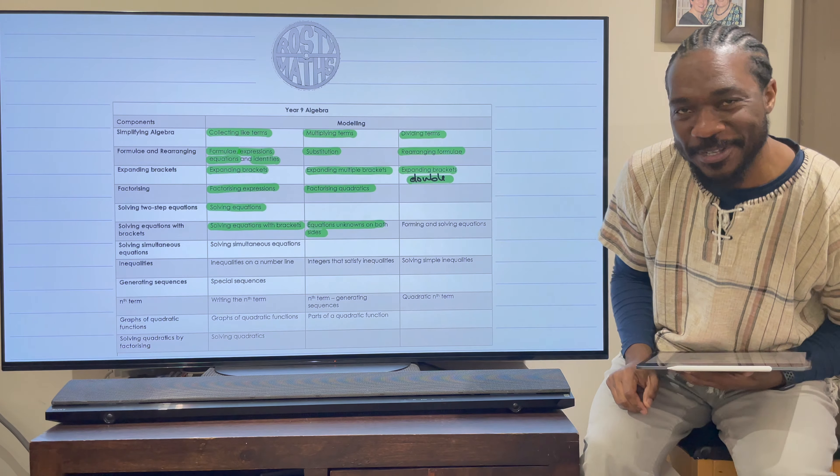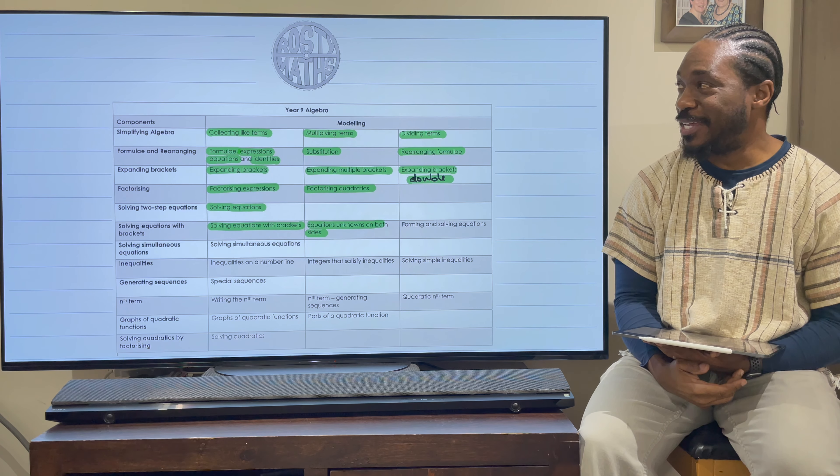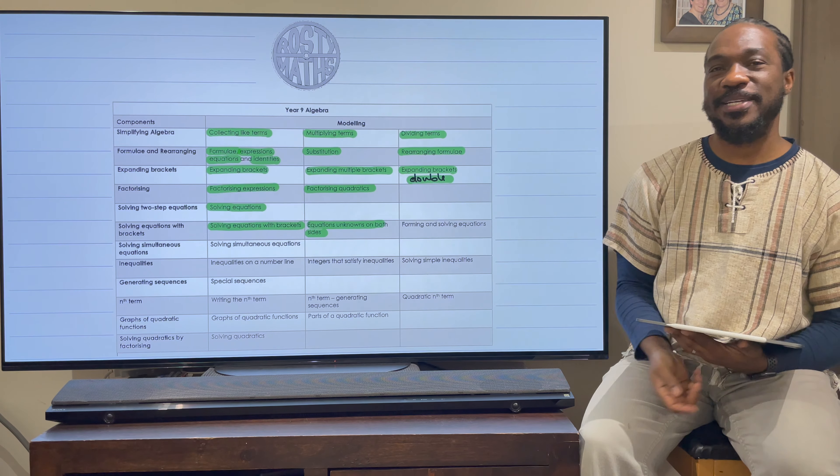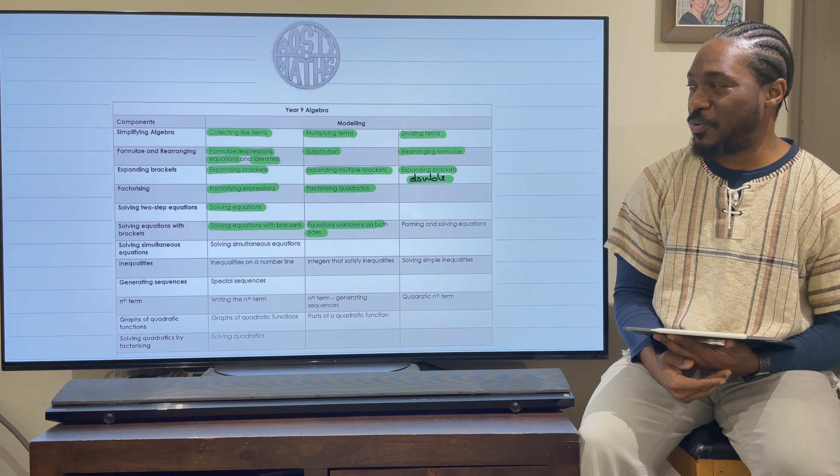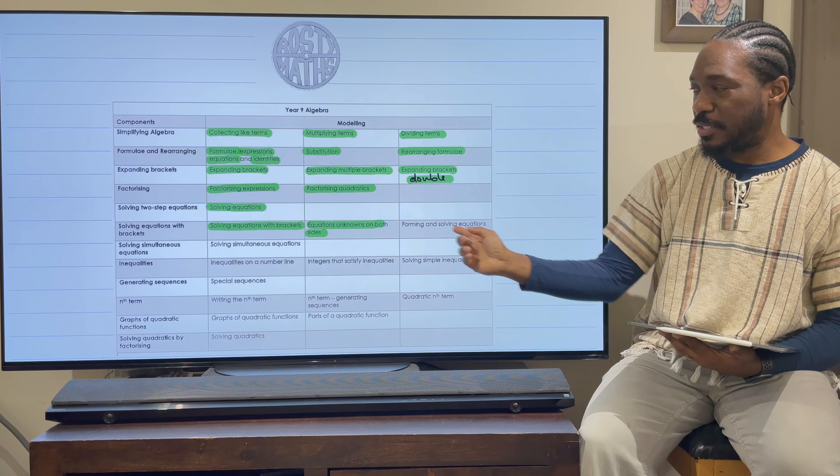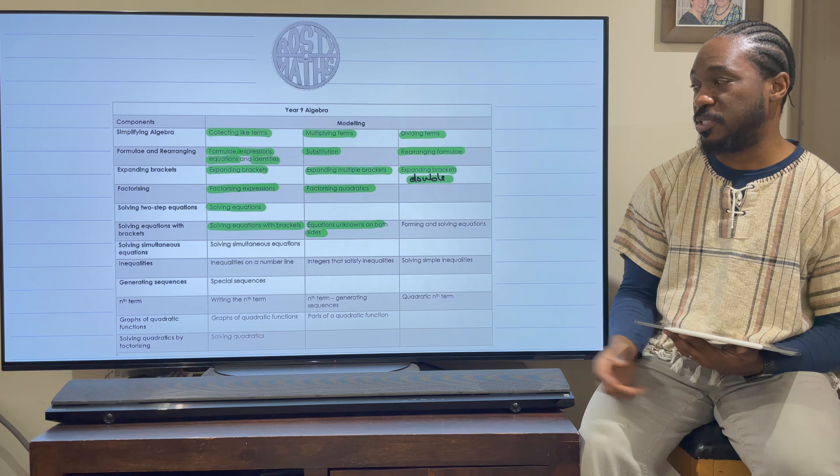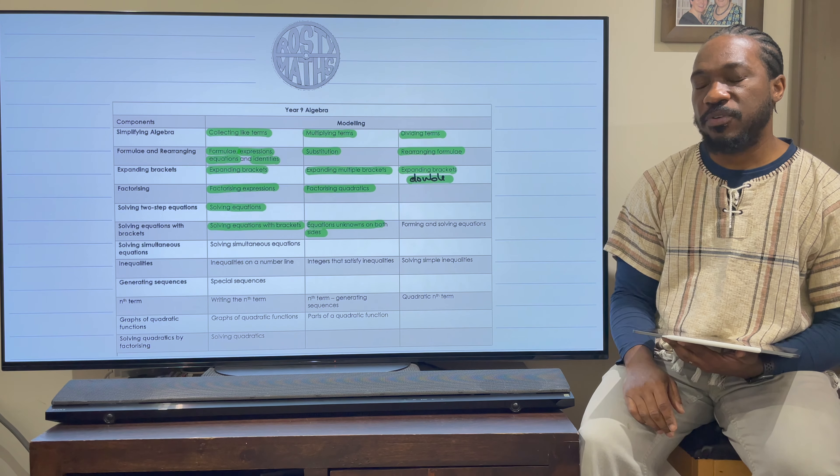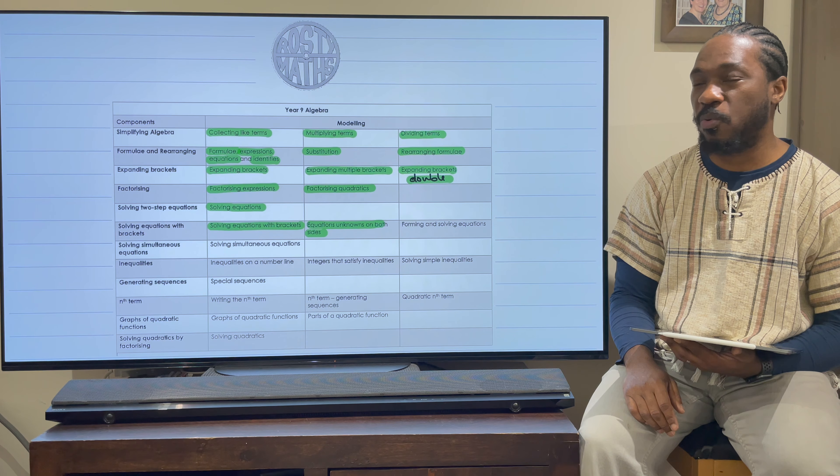Hello everybody in Rusty Maths Land, welcome back to another video and to our Year 9 series on algebra. We've been getting through this rather quickly. Today we are on this last line here: forming and solving equations. This is a massive topic, even right up to GCSE. Students really do get themselves into quite a muddle with forming and solving because sometimes they don't even see it coming.